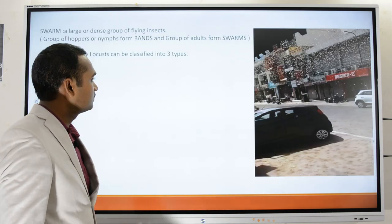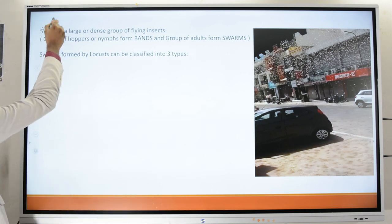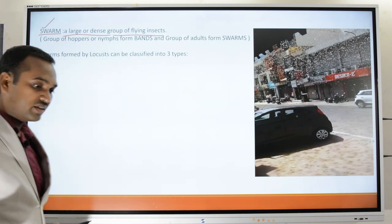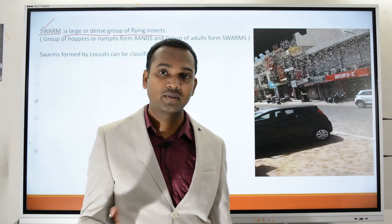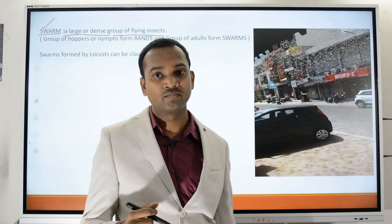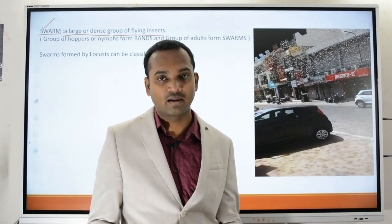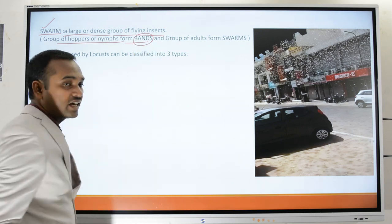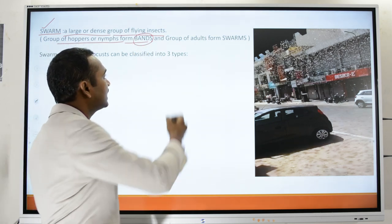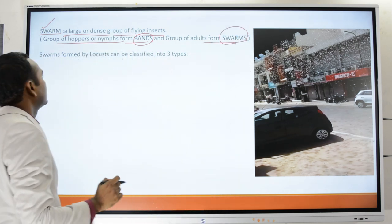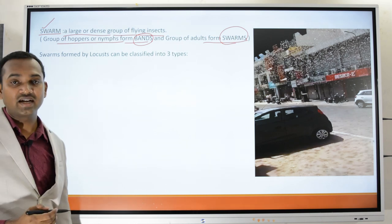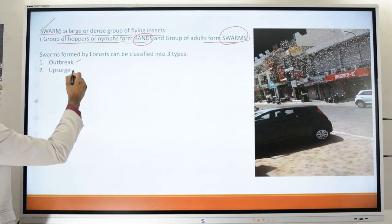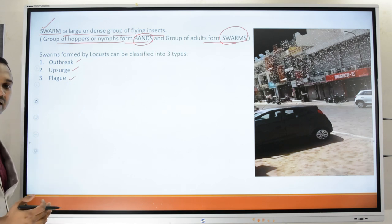A swarm is a large or dense group of flying adult insects. A large group of hoppers or nymphs coming together is called a band, whereas adult locusts coming together are called swarms. The swarming behavior of the locust is classified into three types: outbreak, upsurge, and plague.